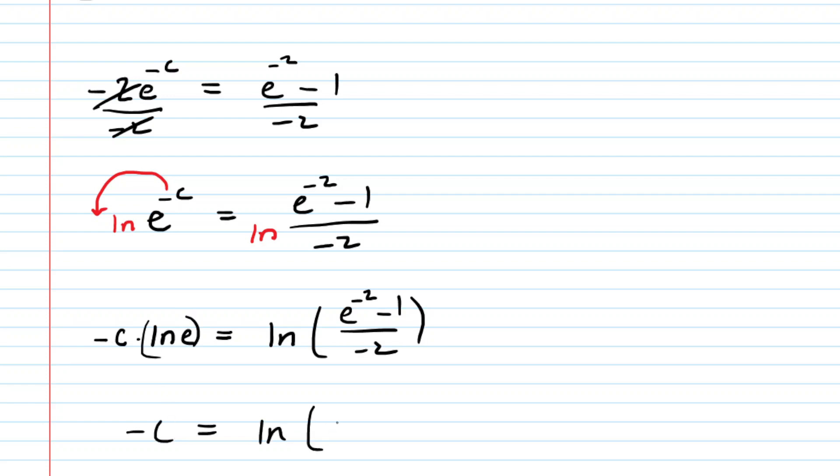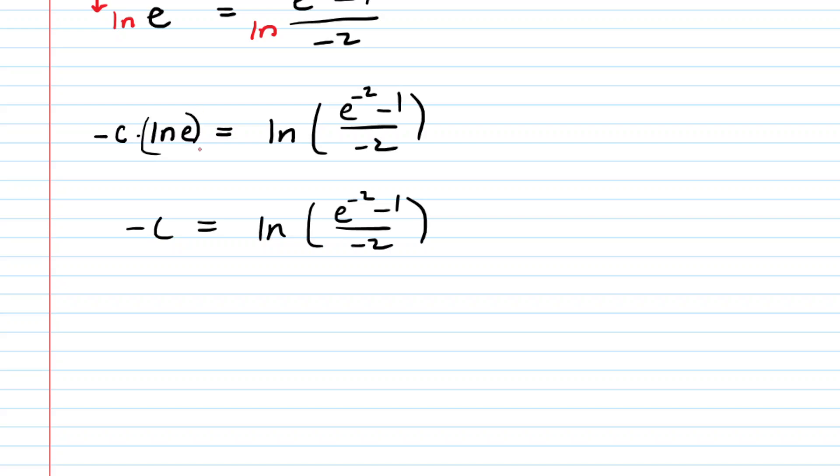And now it's relatively easy to solve for the value of c, because all we need to do is divide both sides by negative 1. Remember this negative sign is an implied negative 1. So just divide both sides by negative 1 to cancel it out on the left side.